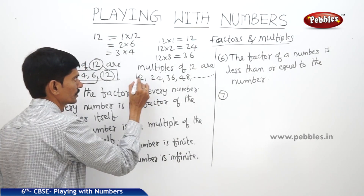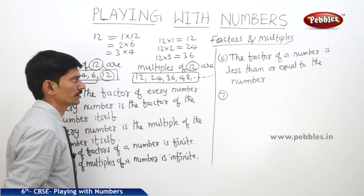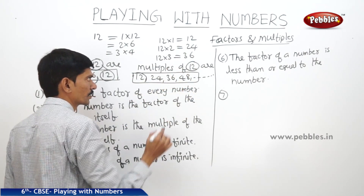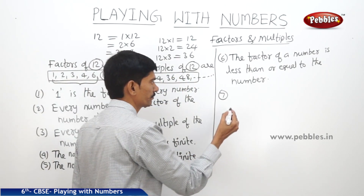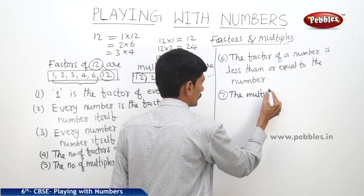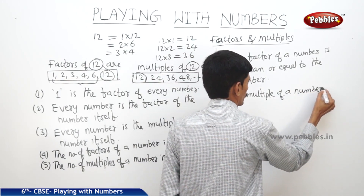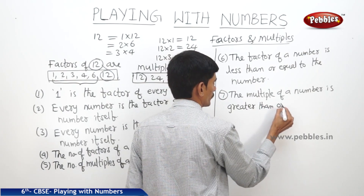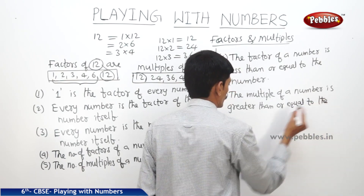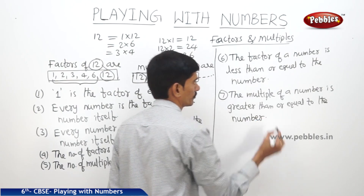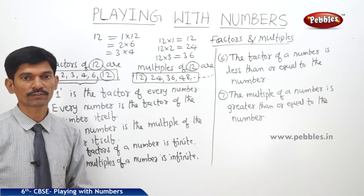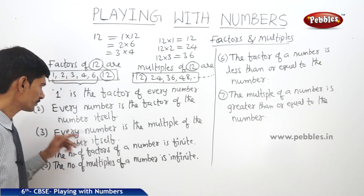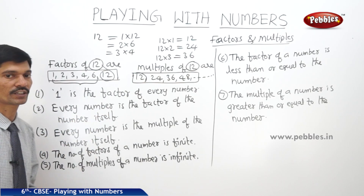But for the multiples of the given number — the multiples of 12 are 12, 24, 36, 48, and so on — only the first multiple 12 is equal to the given number, and all other multiples are greater than the given number. So the multiple of a number is greater than or equal to the number. So these are the properties regarding factors and multiples. To repeat: 1 is the factor of every number and is the least factor of every number. Every number is the factor of the number itself and is the greatest factor of the given number.